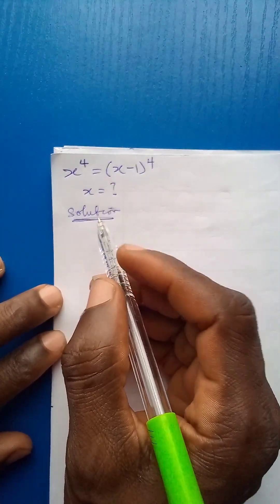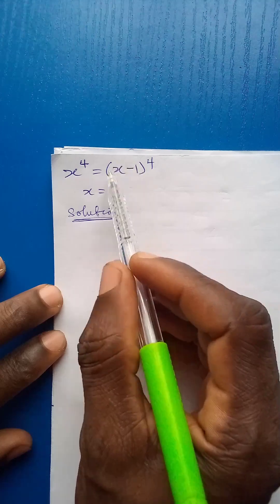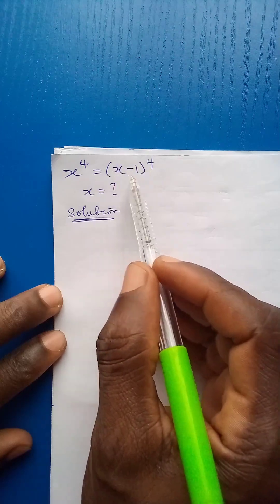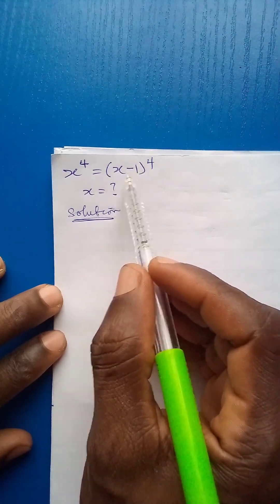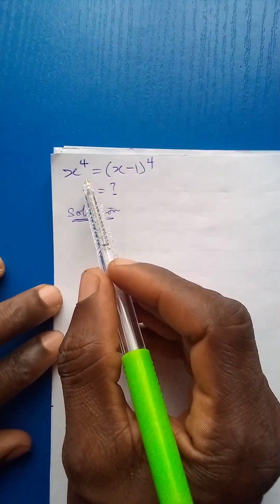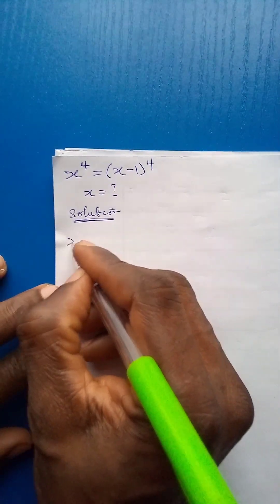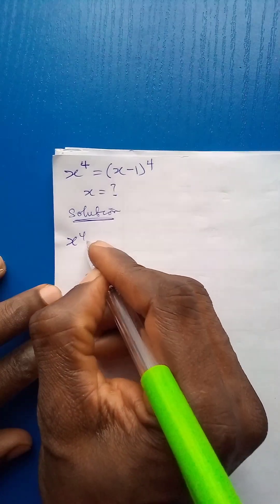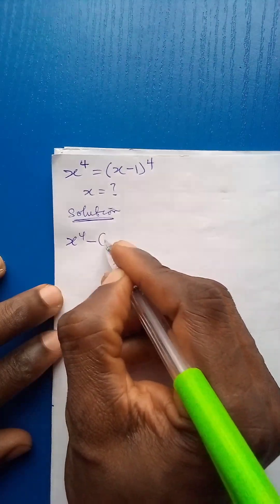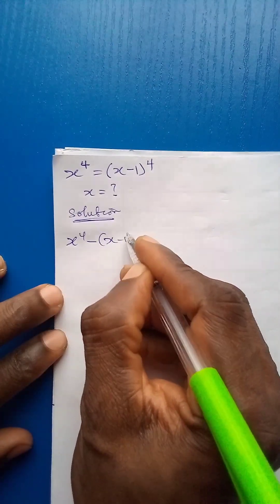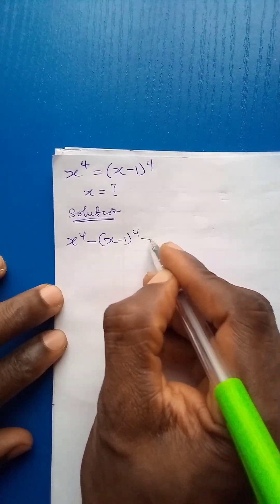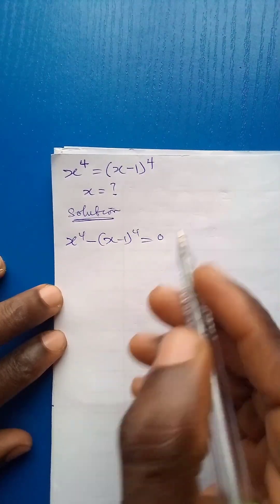Now to solve the problem, I'll take the term on the right-hand side to the left-hand side. It becomes x to the power 4 minus x minus 1 to the power 4 is equal to 0.